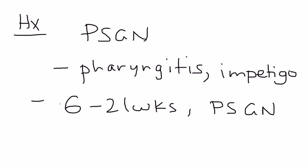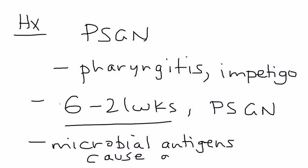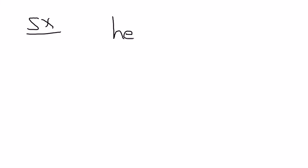After the initial strep infection, the patient develops post-strep GN approximately 6 to 21 weeks later. This occurs because the antigens essentially attack the kidney, causing glomerular damage. An important part of the history is that about one to three weeks prior, the patient had a skin rash or pharyngitis.